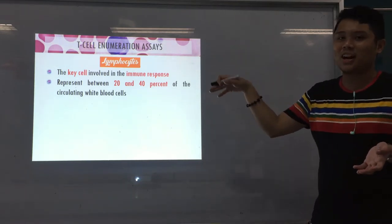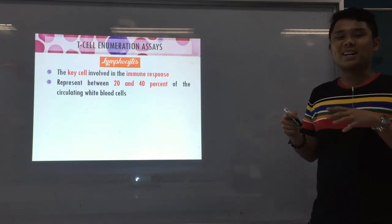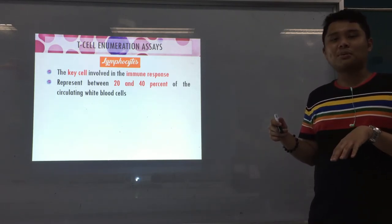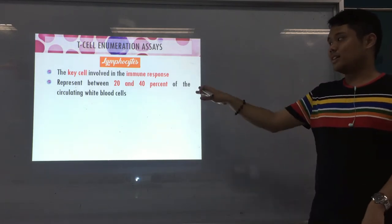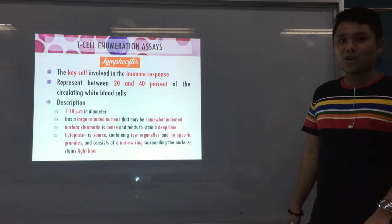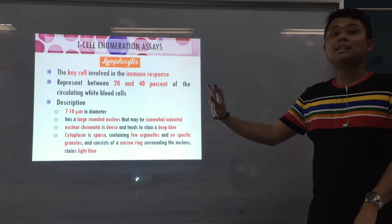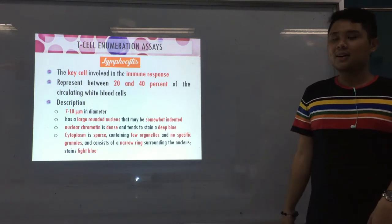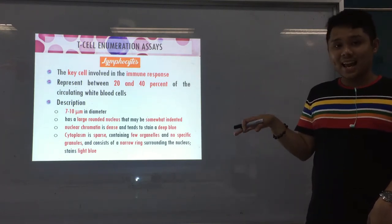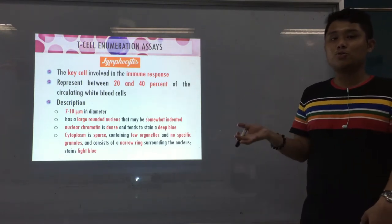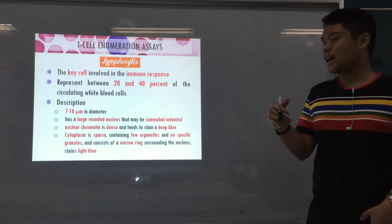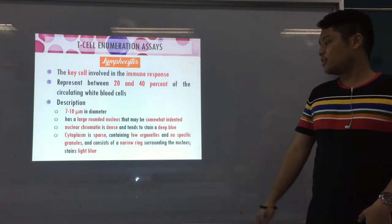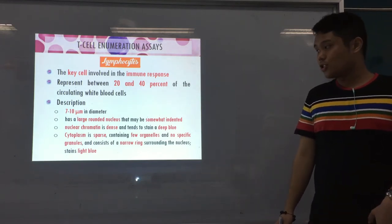In your hematology review — you have 'Never Let Monkeys Eat Bananas' — neutrophils are the most numerous at about 50 to 70%, and then lymphocytes follow at about 20 to 40%. A lymphocyte is 7 to 10 micrometers in diameter, with a large rounded nucleus that is much bigger than the cytoplasm, somewhat indented, with dense nuclear chromatin that tends to stain deep blue.